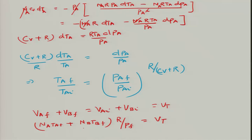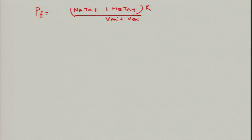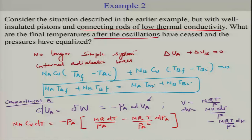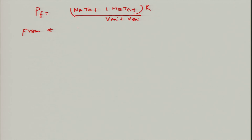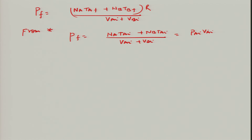Bringing P_F to the left and V_total to the denominator, and recognising from the first-law energy balance that N_A T_AF plus N_B T_BF equals N_A T_AI plus N_B T_BI, we can express P_F entirely in terms of initial conditions. Plugging in the given pressures and volumes, P_F comes out to be 1.5 bar.